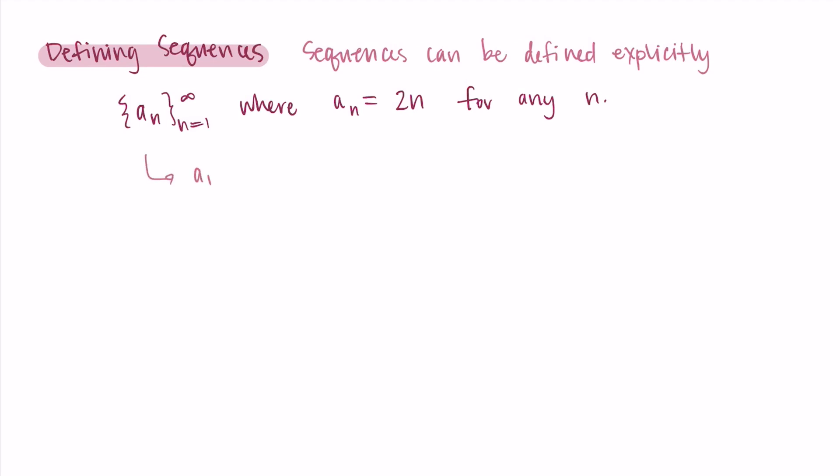So if we were to write them out, it'd be a sub 1, a sub 2, a sub 3, a sub 4, a sub 5. We know that each of these is just 2 times that index, times that subscript. So 2 times 1, 2 times 2, 2 times 3, 2 times 4, 2 times 5, which gives us 2, 4, 6, and 8. The way I have defined this, this is just one way to represent the even positive integers as a sequence.